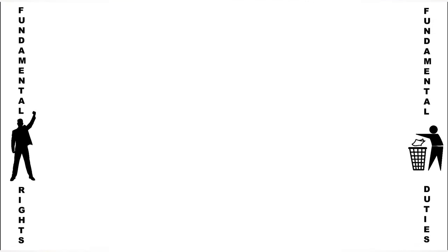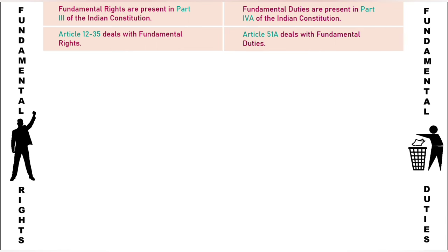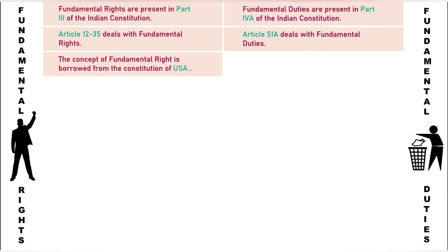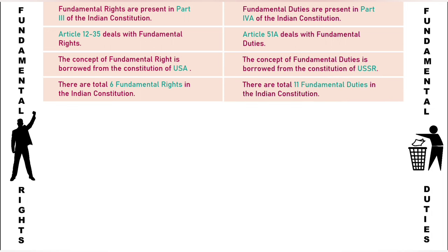Now let's see some key differences between fundamental rights and fundamental duties. 1. Fundamental rights are present in Part 3 of the Indian Constitution, whereas fundamental duties are present in Part 4A. 2. Article 12–35 deals with fundamental rights, whereas Article 51A — only one article — deals with fundamental duties. 3. The concept of fundamental rights is borrowed from the Constitution of USA, whereas the concept of fundamental duties is borrowed from the Constitution of the former Soviet Union, i.e. USSR. 4. There are a total of 6 fundamental rights in the Indian Constitution, whereas the total number of fundamental duties is 11.